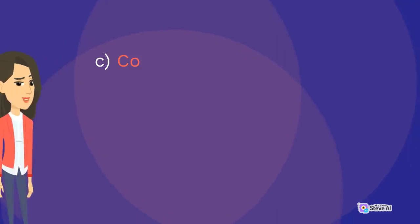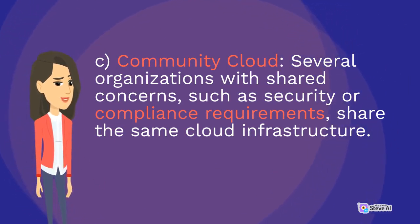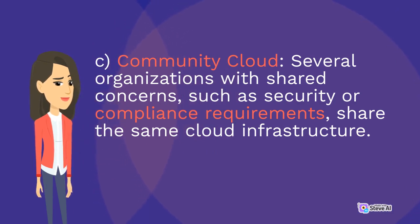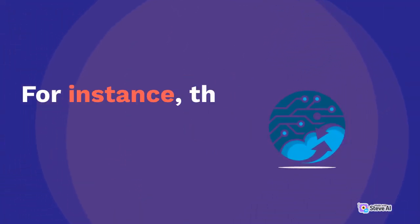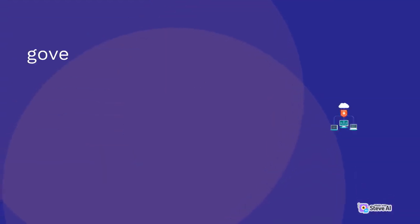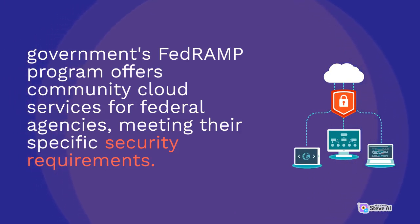C: Community cloud. Several organizations with shared concerns, such as security or compliance requirements, share the same cloud infrastructure. For instance, the US government's FedRAMP program offers community cloud services for federal agencies, meeting their specific security requirements.